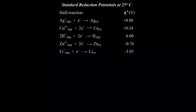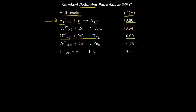Here we have a table of standard reduction potentials — this is a shortened version — but on the left side we have different half reactions, and all of these half reactions are written as reduction half reactions. Remember, gain of electrons is reduction. So if we look at our first half reaction, we have silver ion gaining an electron to form solid silver. That's a reduction half reaction, and the standard reduction potential turns out to be positive 0.80 volts. That's compared to the standard hydrogen electrode down here, which is the reference value with a potential of zero volts, and so all of our other half reactions are compared to this one.